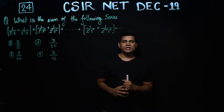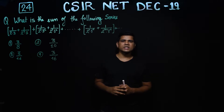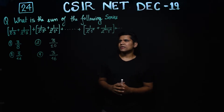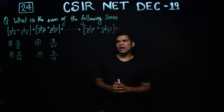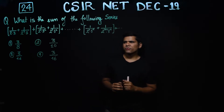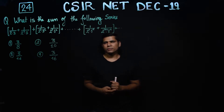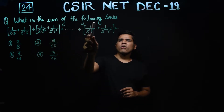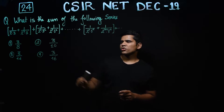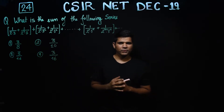Welcome to ExeoMaticos. This video is part of the solution series for CSIR NET December 2019. This is question number 24 of the topic Analysis. Let us begin by reading this question. It says: what is the sum of the following series? So you have a series for which you have to find out the sum.